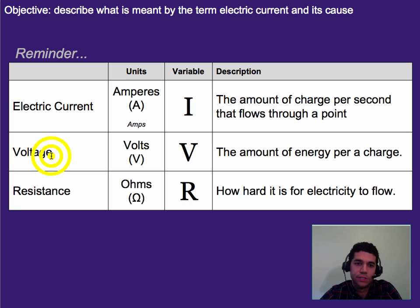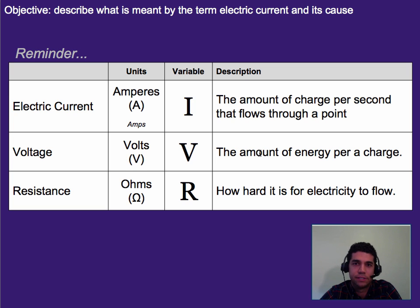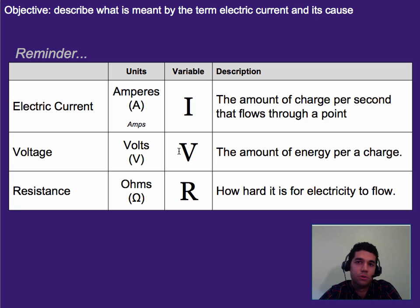Now voltage, which we briefly talked about, is the idea of the amount of energy there is per charge. So for each of these, we're talking about per charge, or kind of a singular charge. In this case, it's how much potential energy does this charge have to give off to a resistor, to a light bulb, to Mario running across your screen, or whatever else it is.